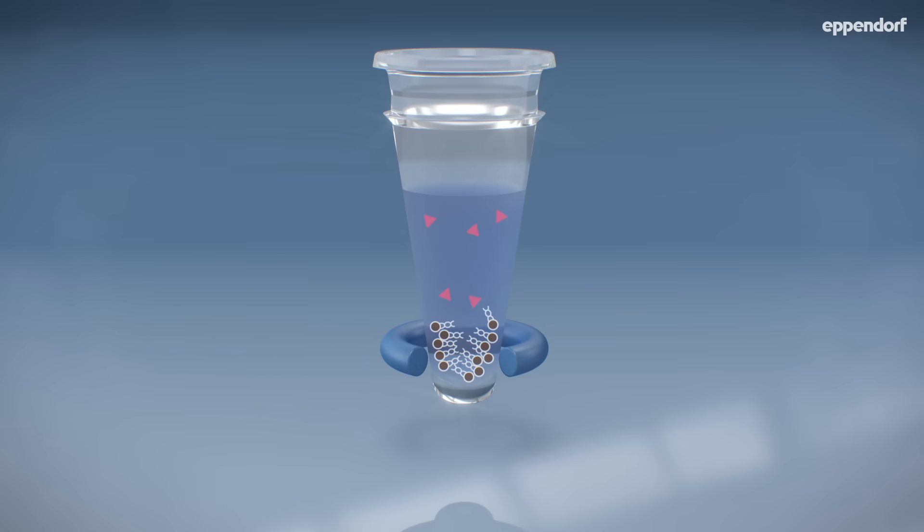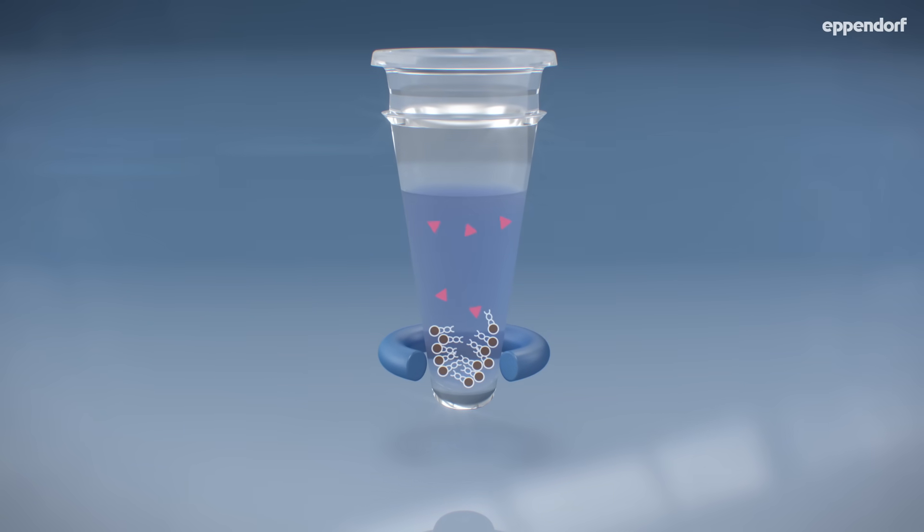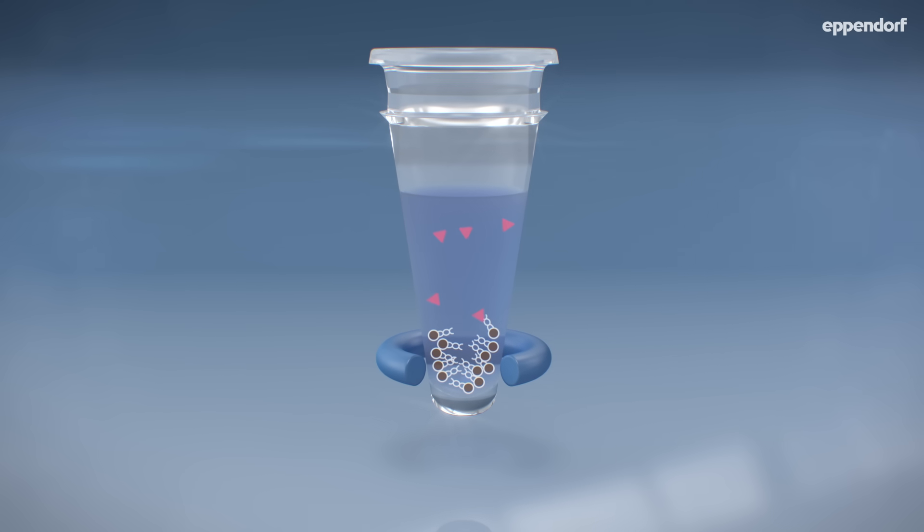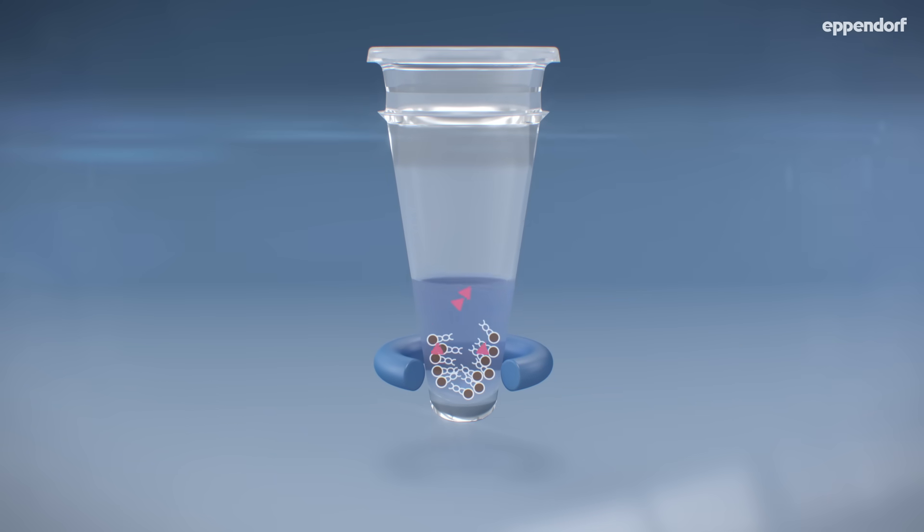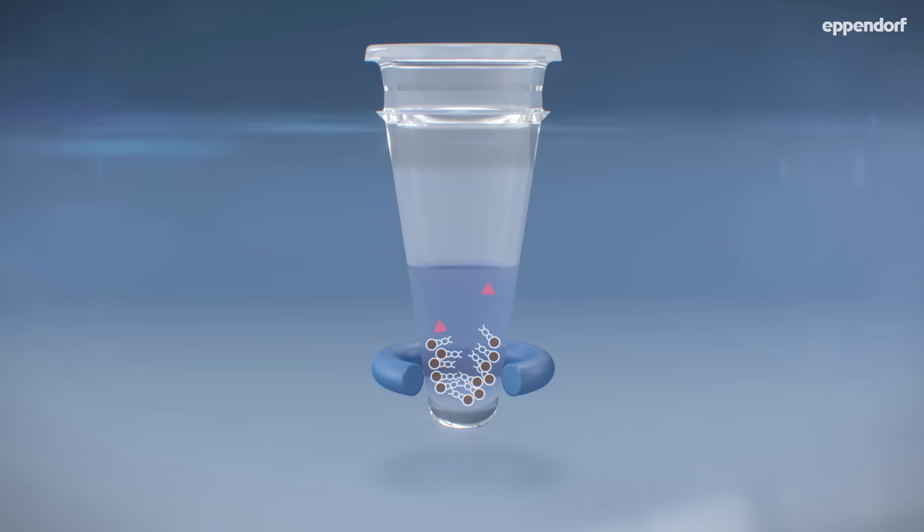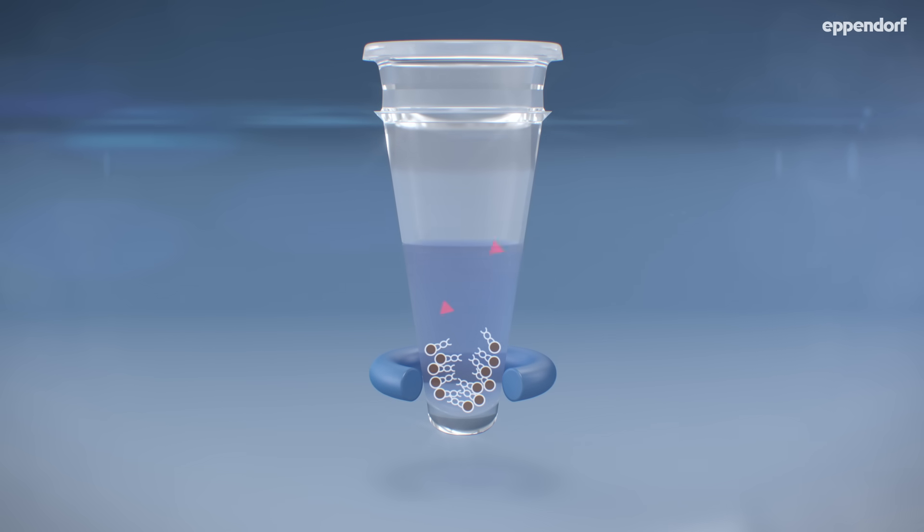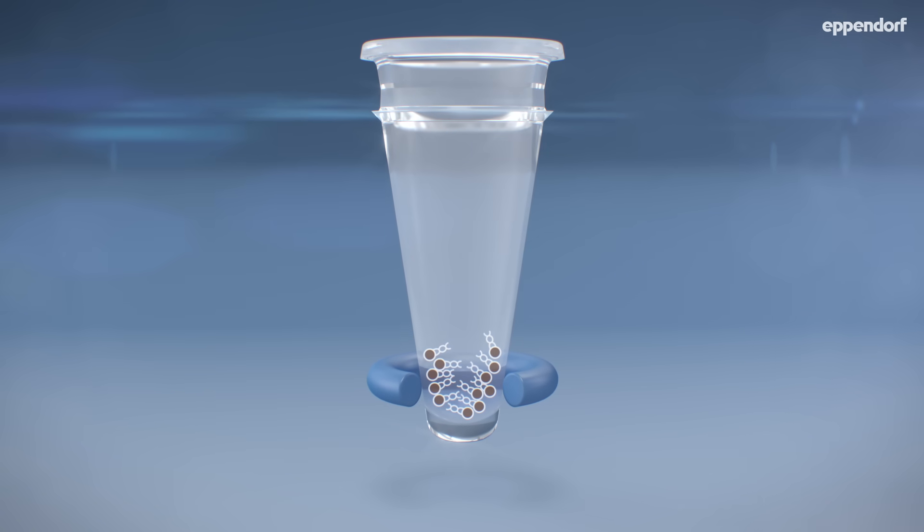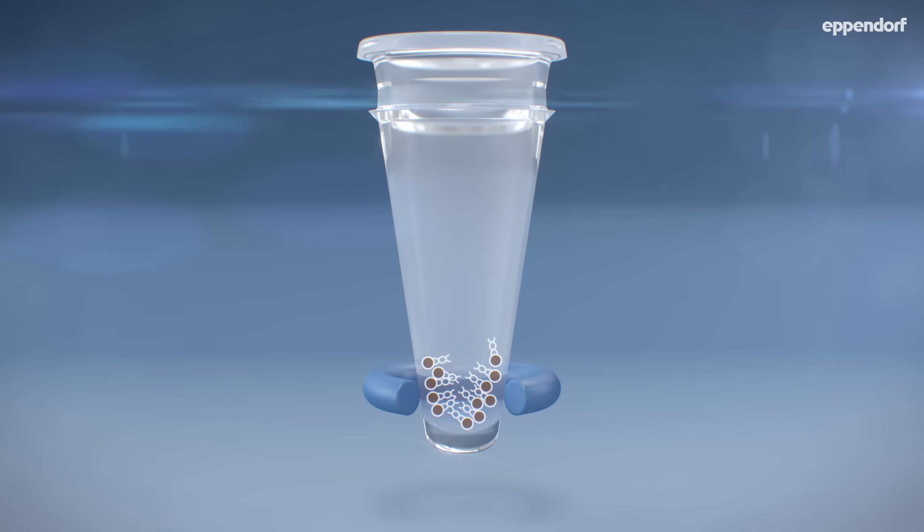With the sample plate still on the magnet, the next step is the ethanol wash. First, the supernatant is removed. The ethanol is added to the pelleted sample and removed. The pellet will then have to dry, to remove any remaining ethanol.